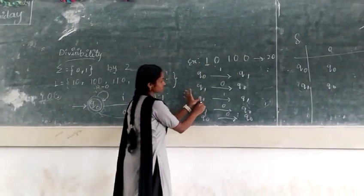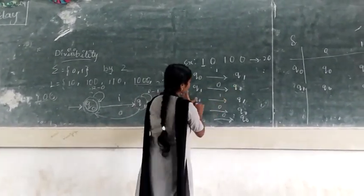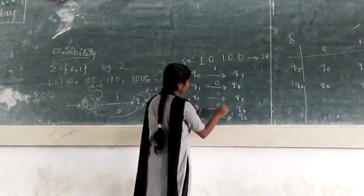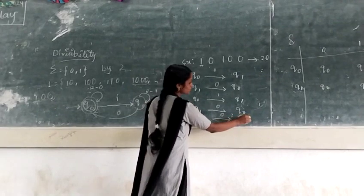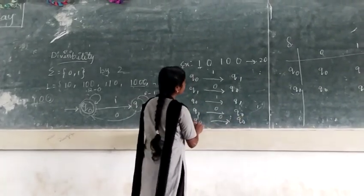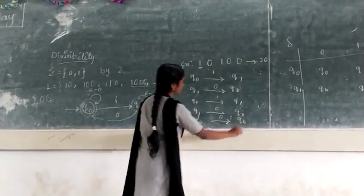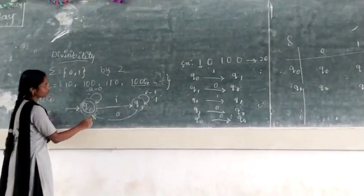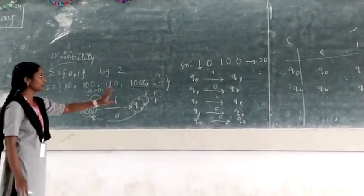Next, our input is one, we are in Q0 state. If we give one to Q0, then it will move to Q1. If we give zero to Q1, then it will move to Q0. If we give zero to Q0, it will go to Q0. So here, it will be reaching the final state, means that number is divisible by two.